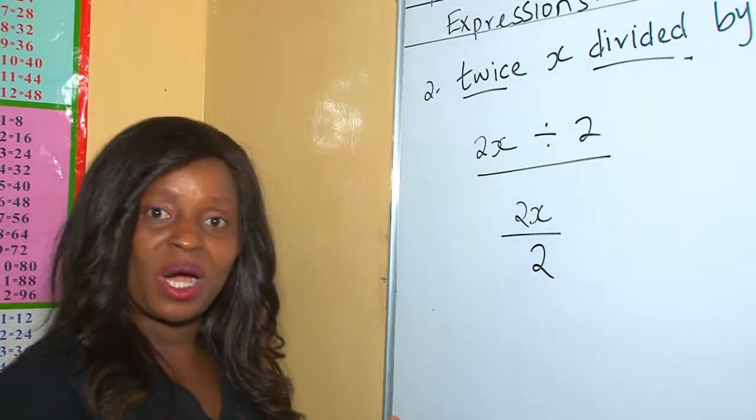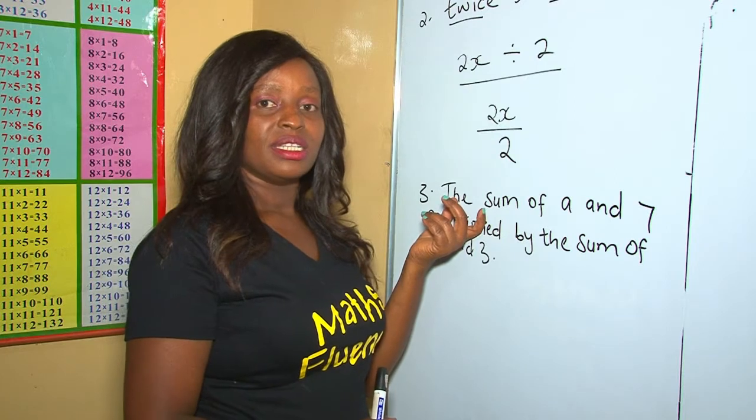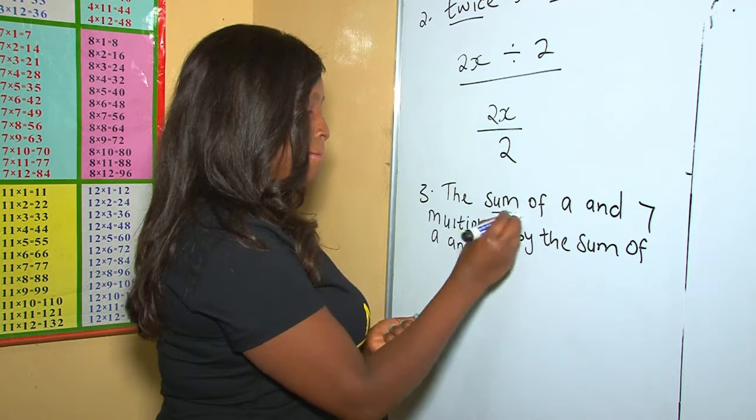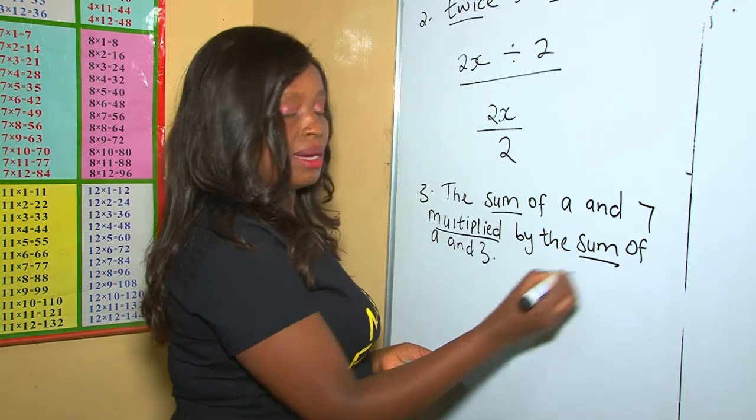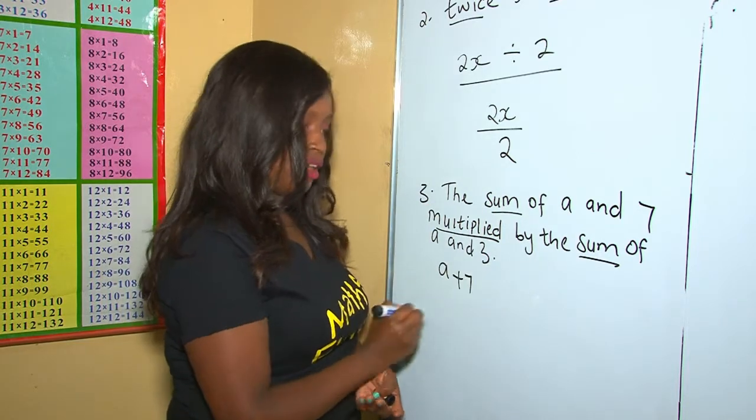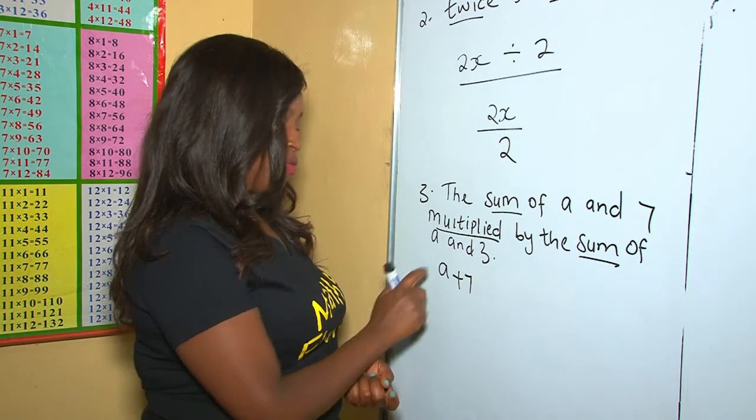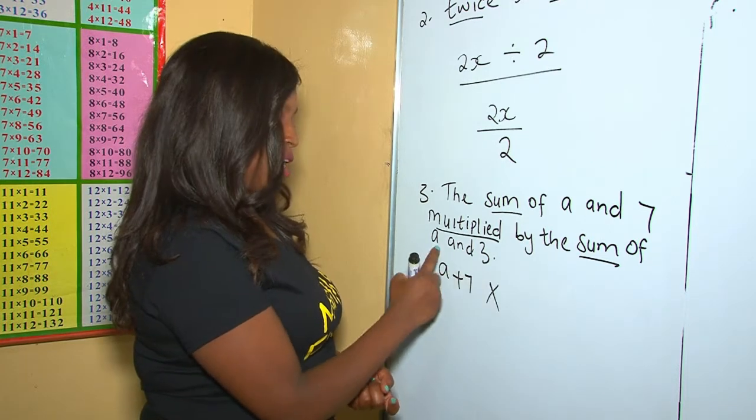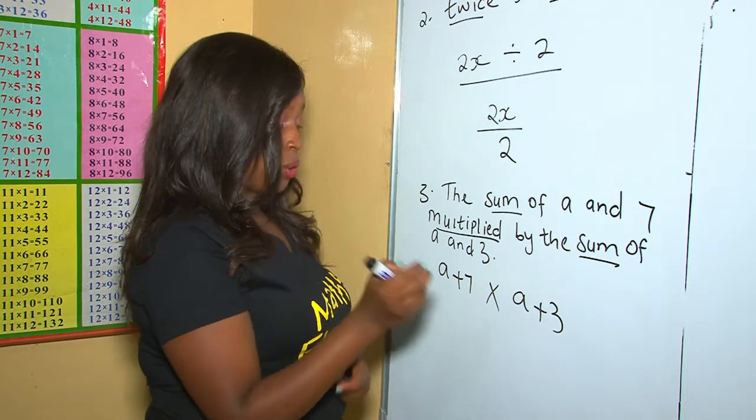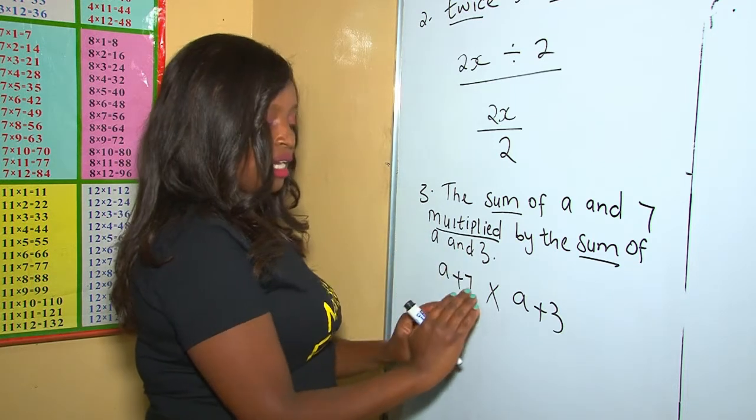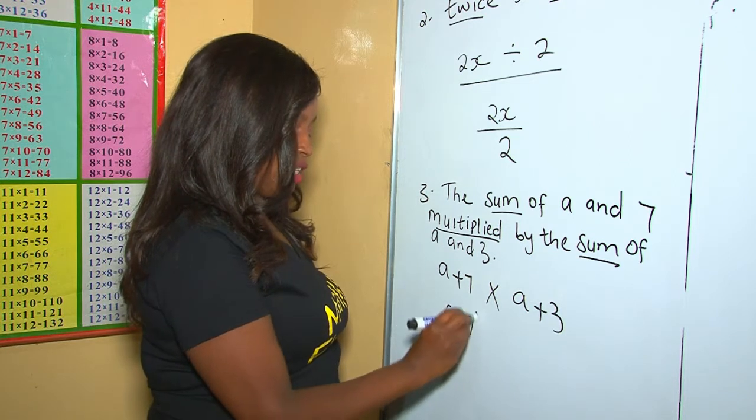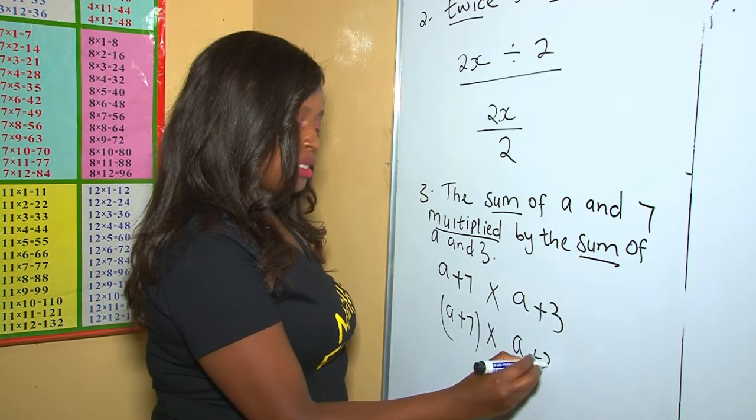Let's do our next example. In this question, there are two phrases, and the phrases are sum. You have another sum. So first of all, you get the sum of a and 7, which is a plus 7, multiplied by the sum of a and 3. So you multiply by the sum of a and 3. So you can either leave it this way or you put brackets to mean whatever is inside here is being multiplied with whatever is inside there. So (a plus 7) multiplied by (a plus 3).